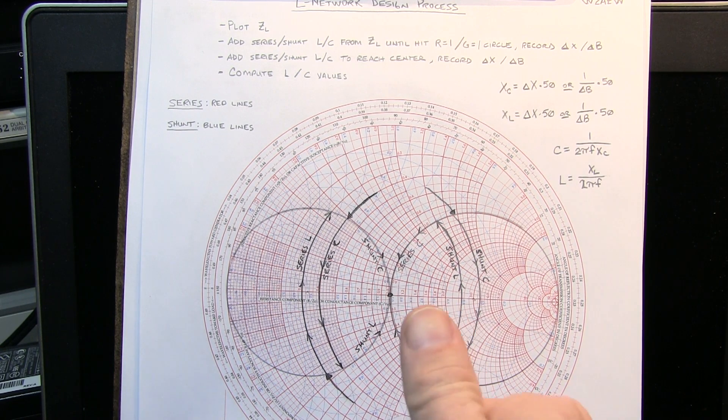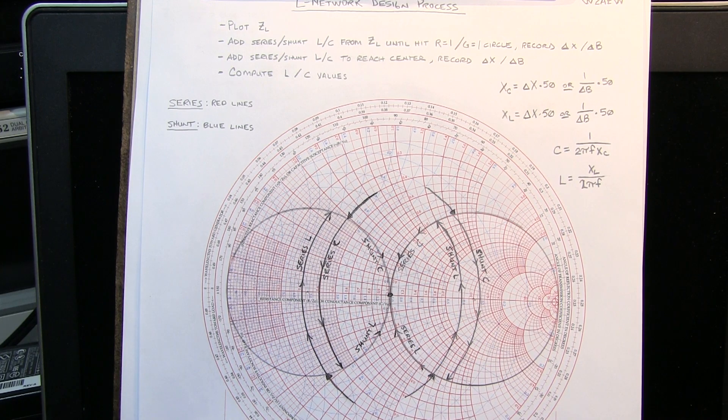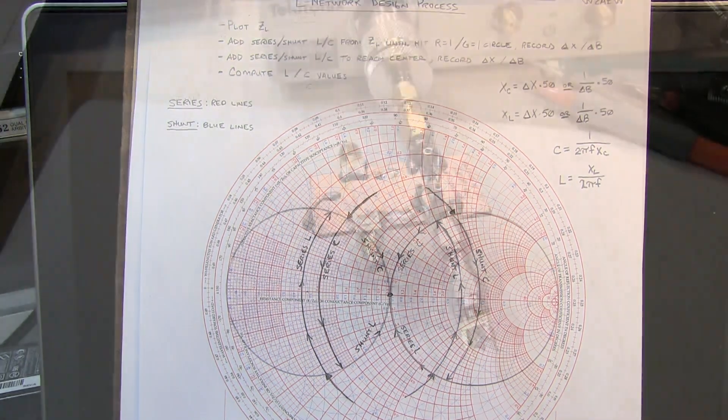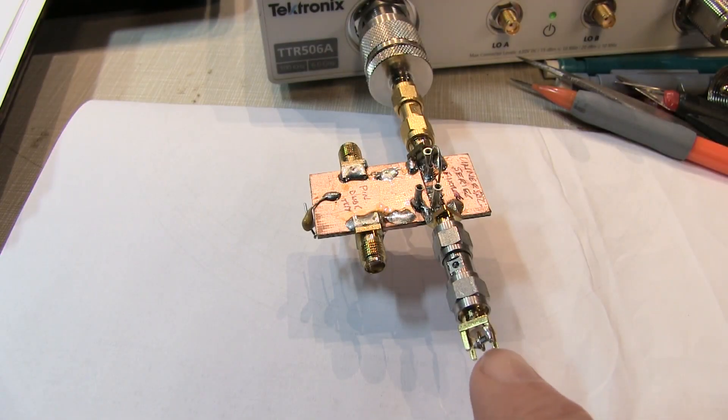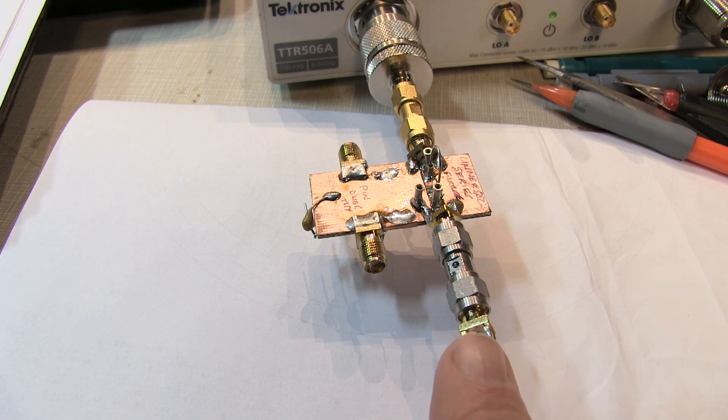And it may sound confusing. Let's actually go do it in a real example. And you'll see it's actually not that hard. I'm going to be using the same 33 ohm and 220 picofarad series combination load that I used in the previous video to show how to plot the impedance. And we're going to impedance match that one.